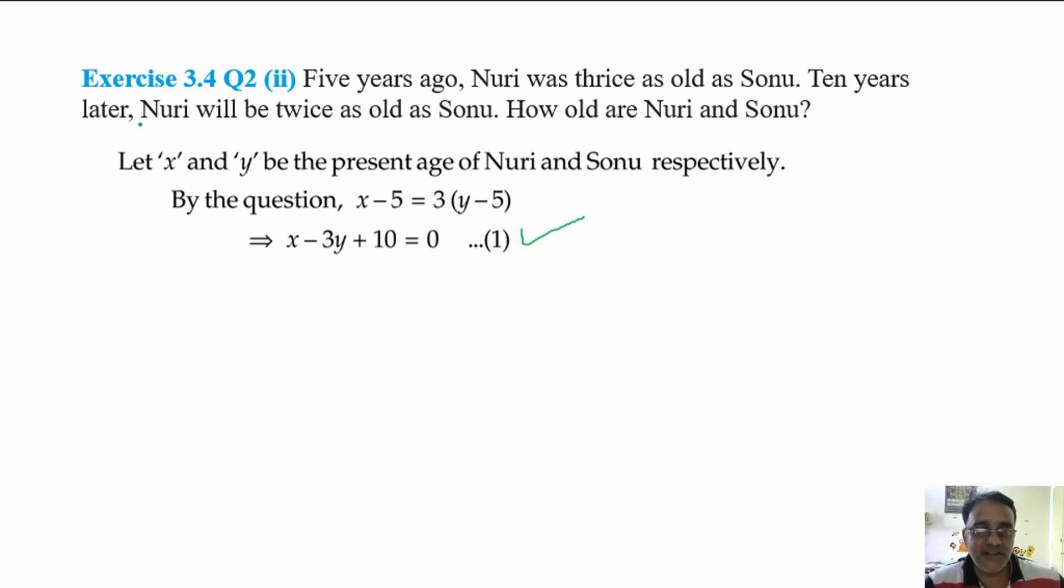Next one. Ten years later, what is the age of Nuri? x minus 10. Age of Sonu? y minus 10. Okay. So Nuri is twice of Sonu. So what we will get from this bracket, we will get 2y plus 20. Now shift 2y to this side minus 2y, plus 20 to this side minus 20. So we will get x minus 2y minus 10 is equal to 0. Any doubt?